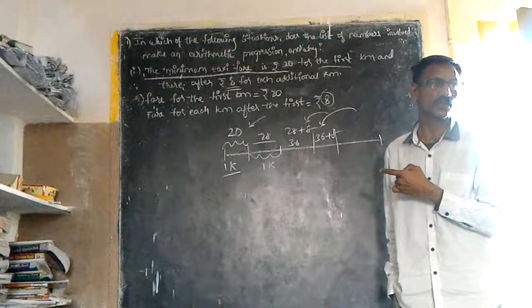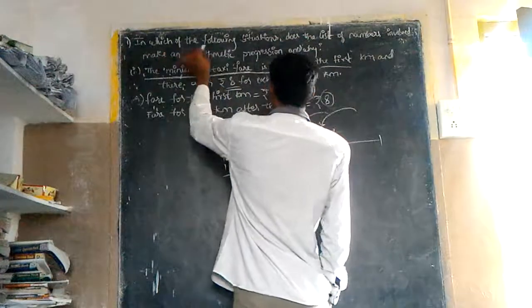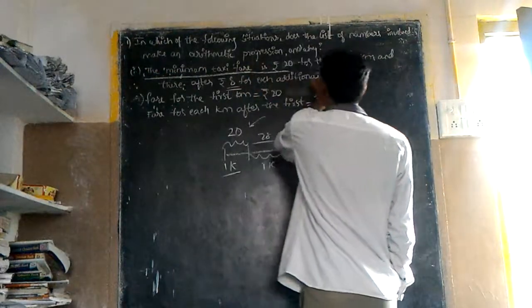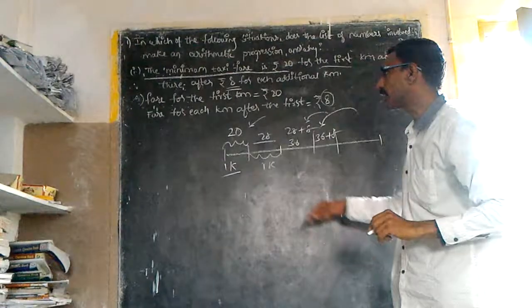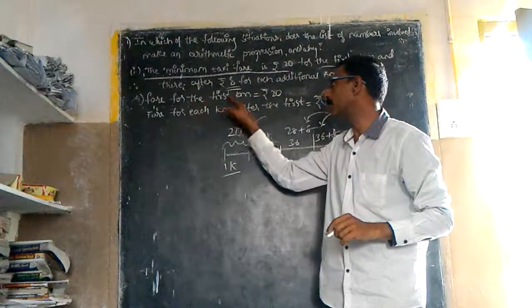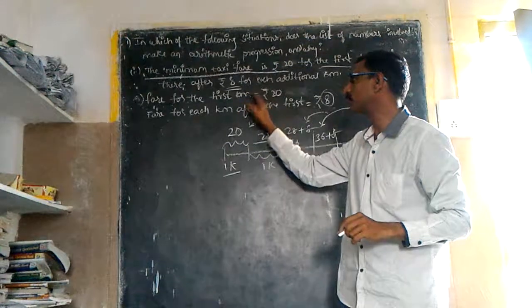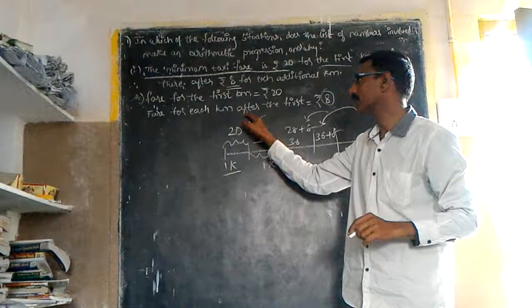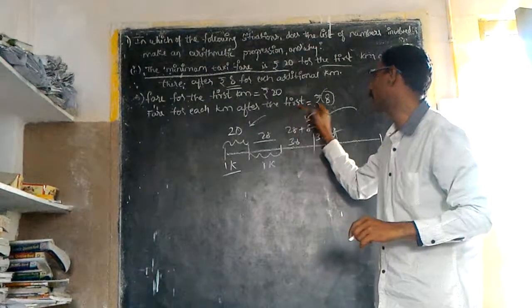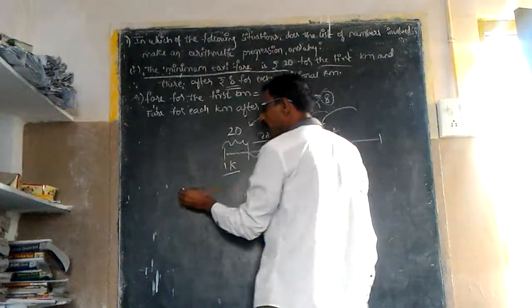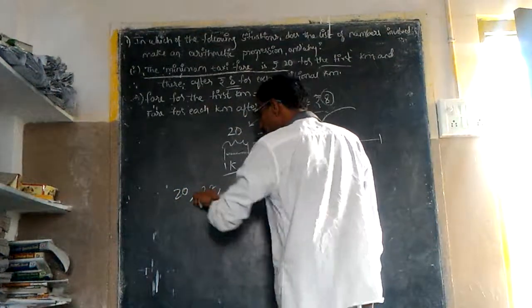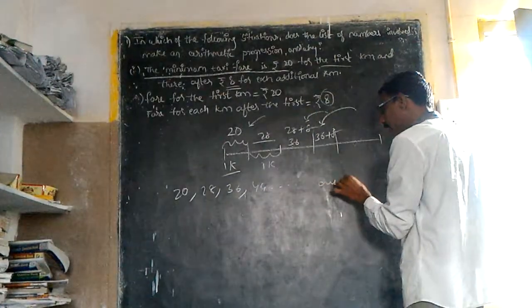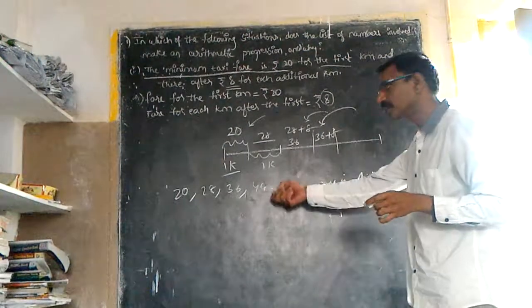In each arithmetic situation, does the list of numbers make an arithmetic progression, and why? The pay for the first kilometer is 20 rupees. For each kilometer after the first kilometer is 8 rupees. Therefore, you write it down: 20, after the next term 28, after the next term 36, after the next term 44, and so forth in arithmetic progression. And also you give the reason.